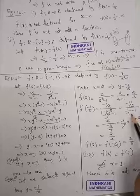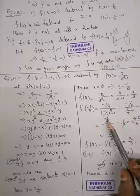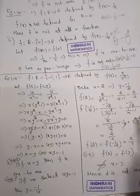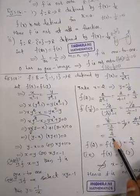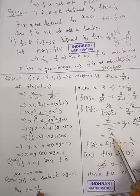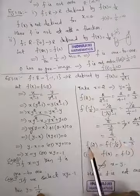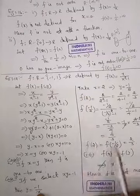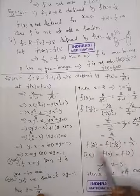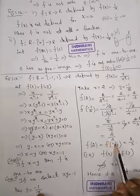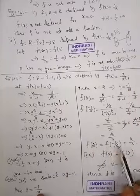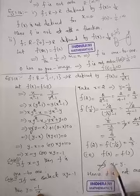F of 2 will be 2 over 2 squared minus 1, which is 2 over 3. But x is not equal to y - x is 2, y is minus 1 by 2. f(x) equals f(y), which does not imply that x equals y.